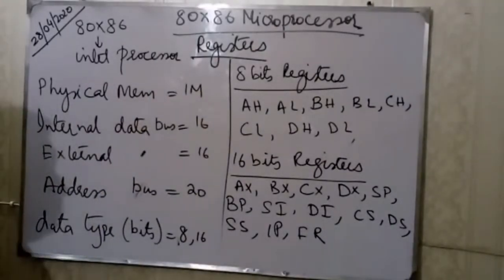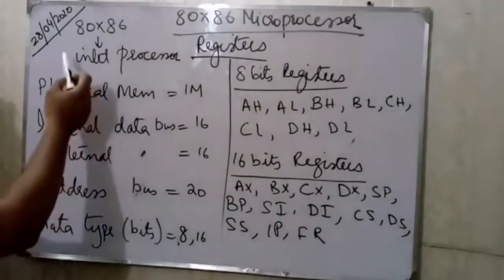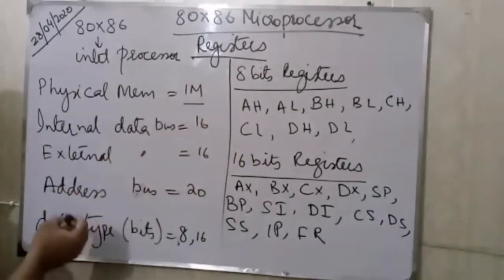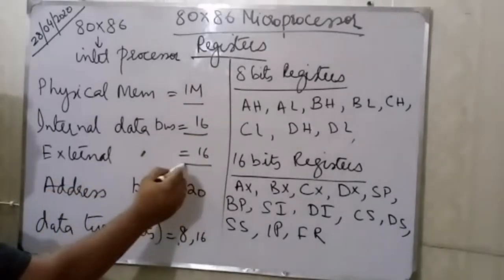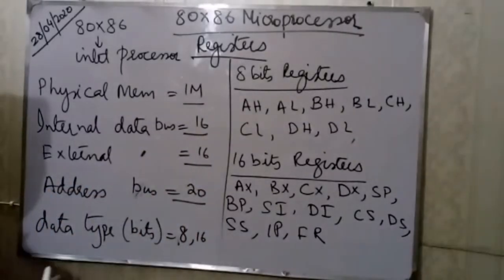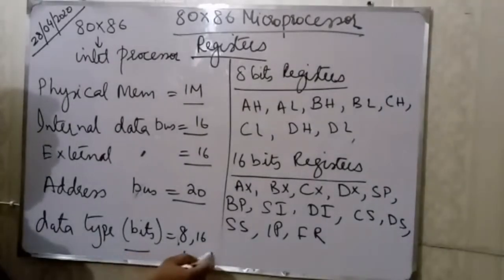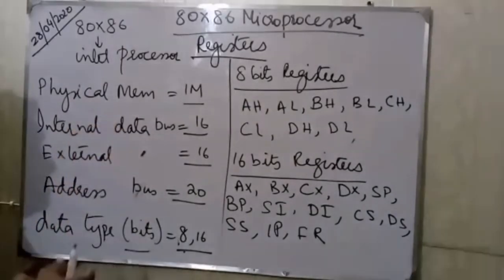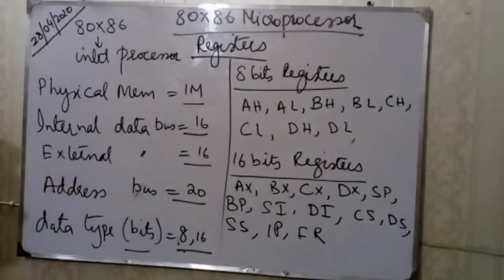First of all, you need to know what it is. This is the Intel processor. The second important point is that the physical memory is 1 megabyte. The internal data is 16 bits, external data is 16 bits, and the address bus is 20 bits. The data types are 8 or 16 bits. At the introduction level, the processor key architecture is defined. This is 8 or 16 bits.